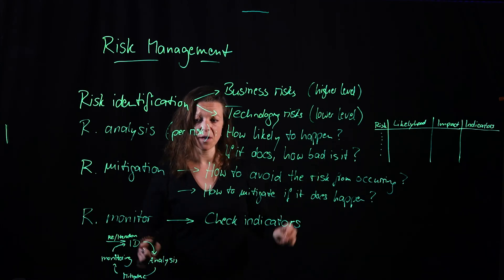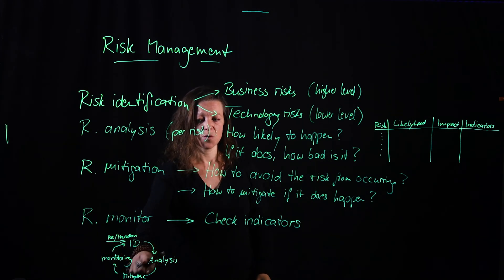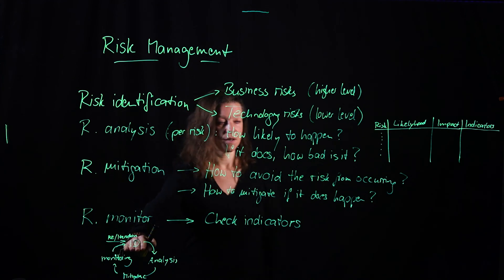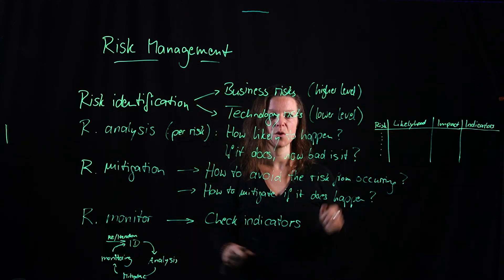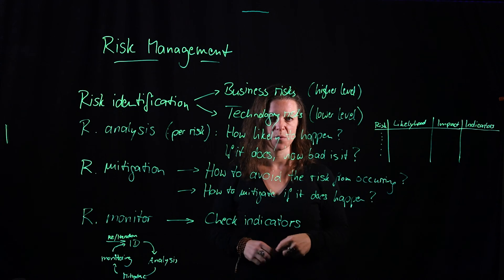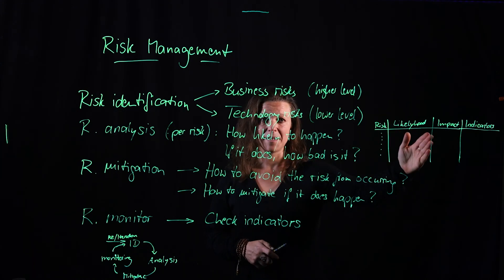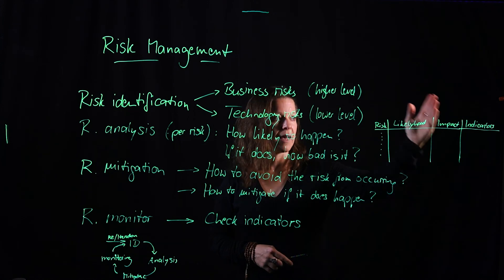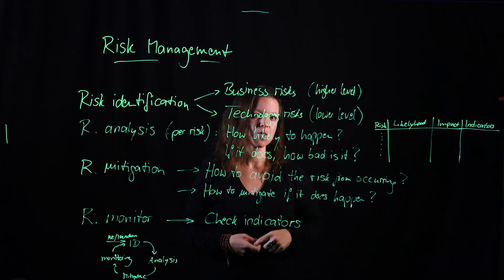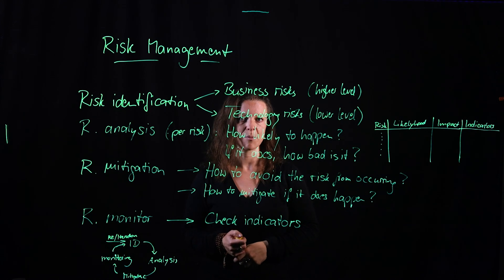So two things to keep in mind. First, circular process of these four phases. And second one, you want to have one good overview table of all your risks for your specific project, how likely they're going to occur, how bad it is going to be if they happen, and what indicators you could use to see early on whether something is going to happen.